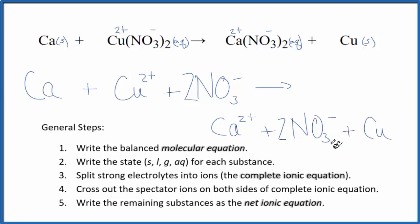And this is the total or complete ionic equation. So now what we can do is we can cross out spectator ions. They appear on both sides, in the reactants and the products. They don't change, so we're really not worried about them.